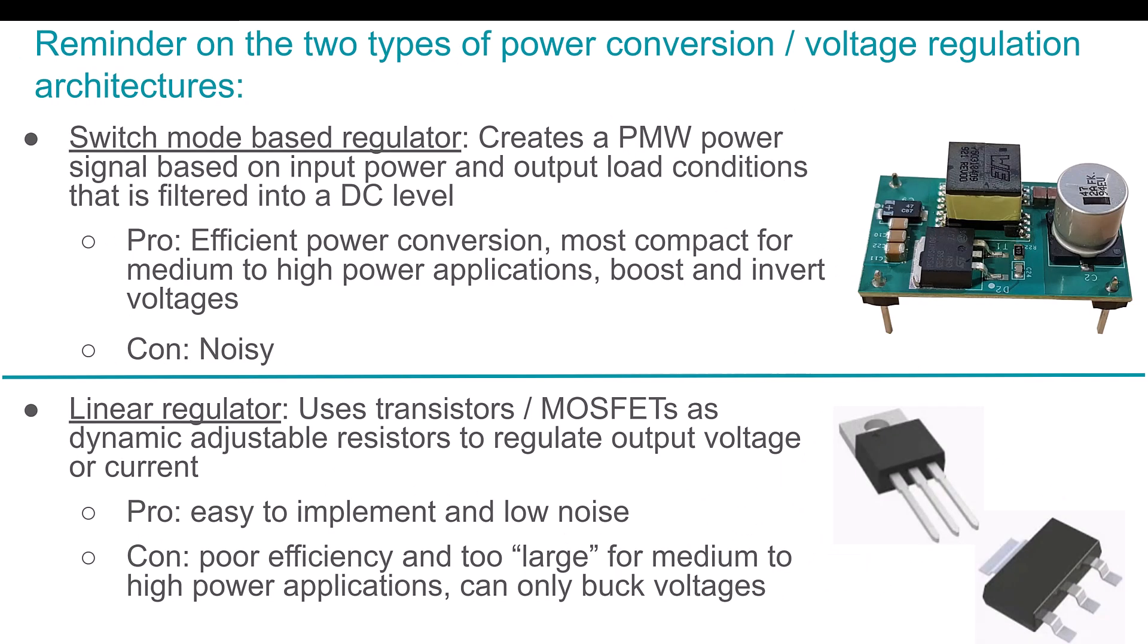Now, before we get into the nuts and bolts of the PSRR specification, it's important that I point out that there's two main types of voltage regulators out there, two main architectures. Now, there's more than two, but these are the two main ones. And when I say regulator for this presentation, I'm just going to say voltage regulator. Of course, you could have a current regulator that does constant current instead of constant voltage. But for simplicity, we're just going to talk about constant voltage.